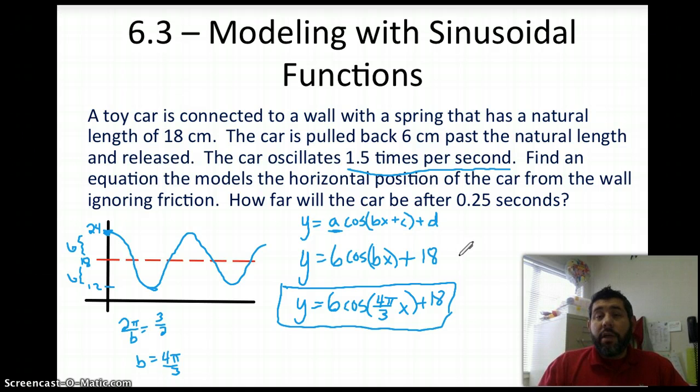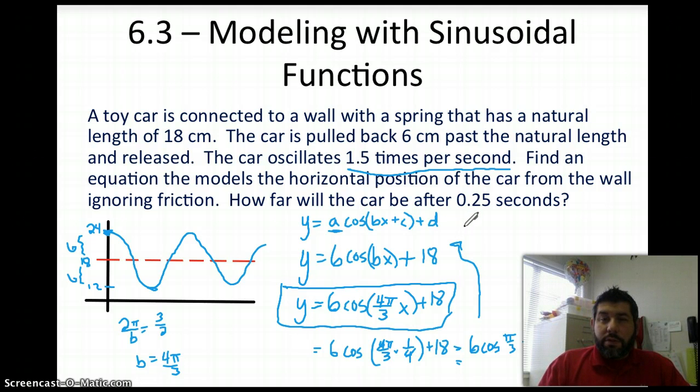So the next question says, how far will the car be after a quarter of a second? So all I'm going to do is plug in 1 fourth here, times 1 fourth, because that's my time in seconds. That's going to cancel out. I'm going to have cosine of π over 3, 6 cosine of π over 3, plus 18. Cosine of π over 3, well, we would use our unit circle. Using the unit circle, cosine of π over 3, we're going to 6 times the cosine of π over 3 is one half plus 18. So I'm going to get 3 plus 18, which is 21 centimeters.